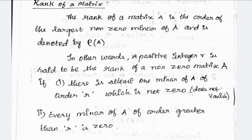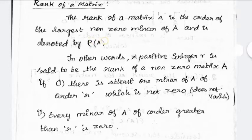Rank of the matrix is the order of the largest non-zero minor of A, and is denoted by ρ(A). I will denote this and I am going to explain the steps.